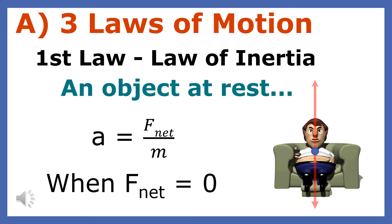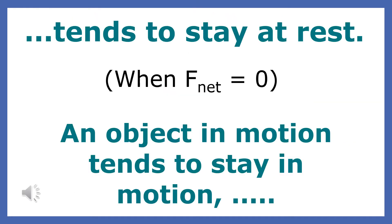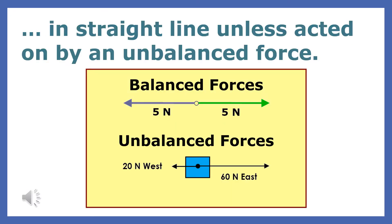In the first law, Newton states that when forces on an object at rest are balanced, it tends to stay at rest. When the net force is zero and an object's in motion, it tends to stay in motion in a straight line, unless acted on by an unbalanced force.